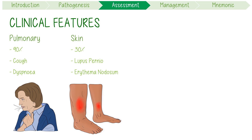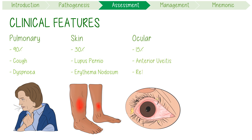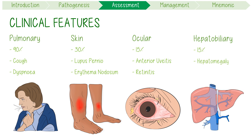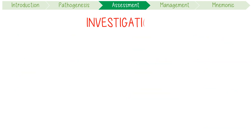Erythema nodosum presents as tender red nodules on the anterior of the shins, secondary to inflammation of the subcutaneous fat. Ocular involvement occurs 15% of the time, most commonly with anterior uveitis; however retinitis and blindness are also severe manifestations. Hepatobiliary involvement occurs 15% of the time, manifesting with hepatomegaly and intrahepatic cholestasis.